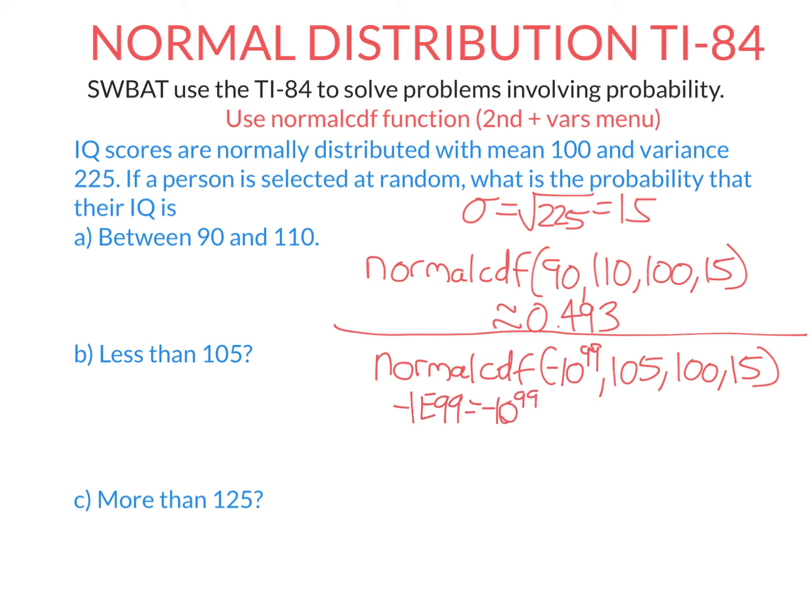So note that may come up on your calculator as minus 1e to the 99. That means exactly the same thing, minus 10 to the power of 99. So again, I don't expect anyone to be able to do this off the top of their head, but you should have some idea of what the answer should be. So note 105 is just more than the mean. So the probability it's less than a number that's just more than the mean, it should be an answer that's a little bit more than 50%. Because 50% of scores of a normal distribution are below the mean, 50% are above. So indeed, putting this in our calculator, we get about 0.63. And then we're done.